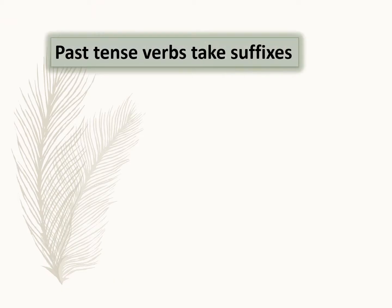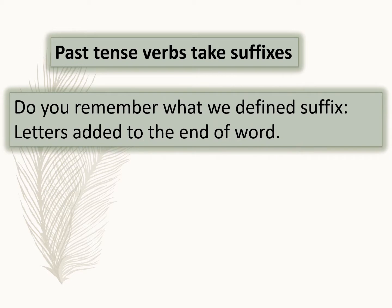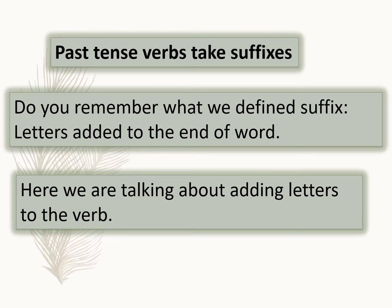Past tense verbs take suffixes. If you remember present tense, we said present tense sometimes takes a prefix and sometimes it takes a suffix. Suffix means letters you add to the end of the word. Prefix is the opposite — letters you attach to the beginning of the word. Now, all past tense verbs take suffixes — letters you add to the end of the verb. Let's get started.